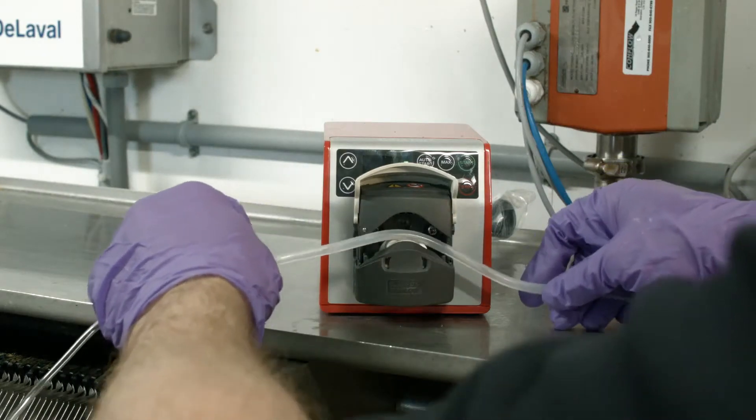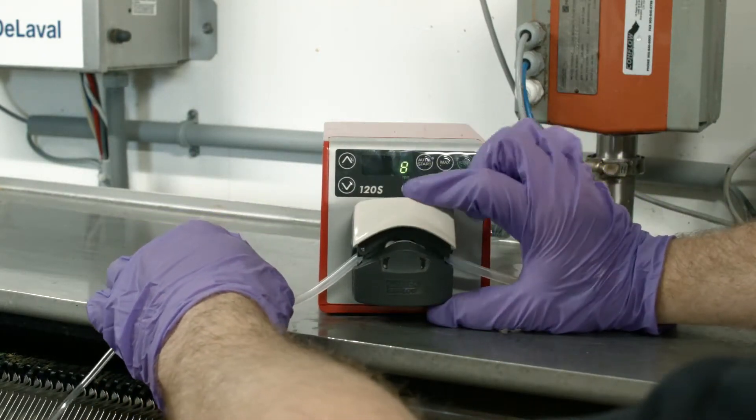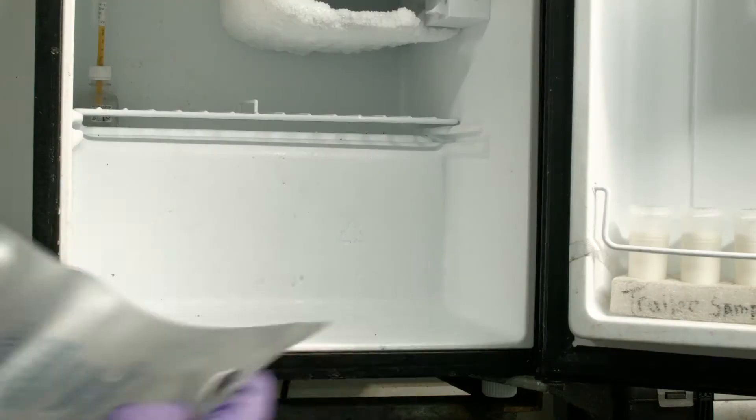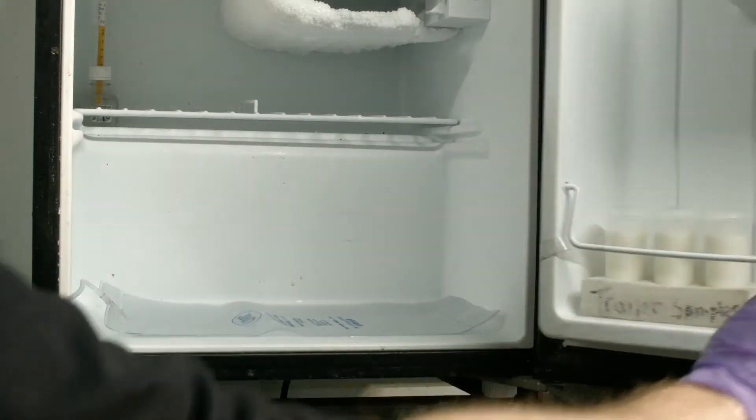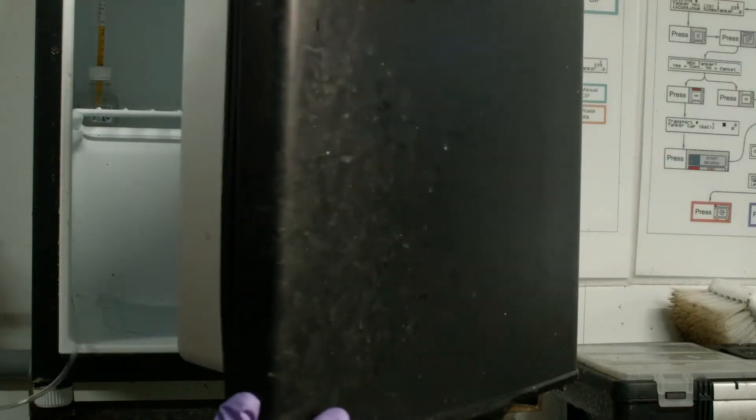Place the soft portion of the tube attached to the collection bag into the peristaltic pump and place the bag in the cooler or refrigerator that is set between 0 and 4.4 degrees Celsius as required by PMO regulations.